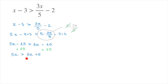Now I want to make sure I get rid of this 3x on the right-hand side. To do that, I subtract 3x from both sides. So we're left with 5x minus 3x, that's 2x, greater than 3x plus 5 minus 3x, which is just 5.